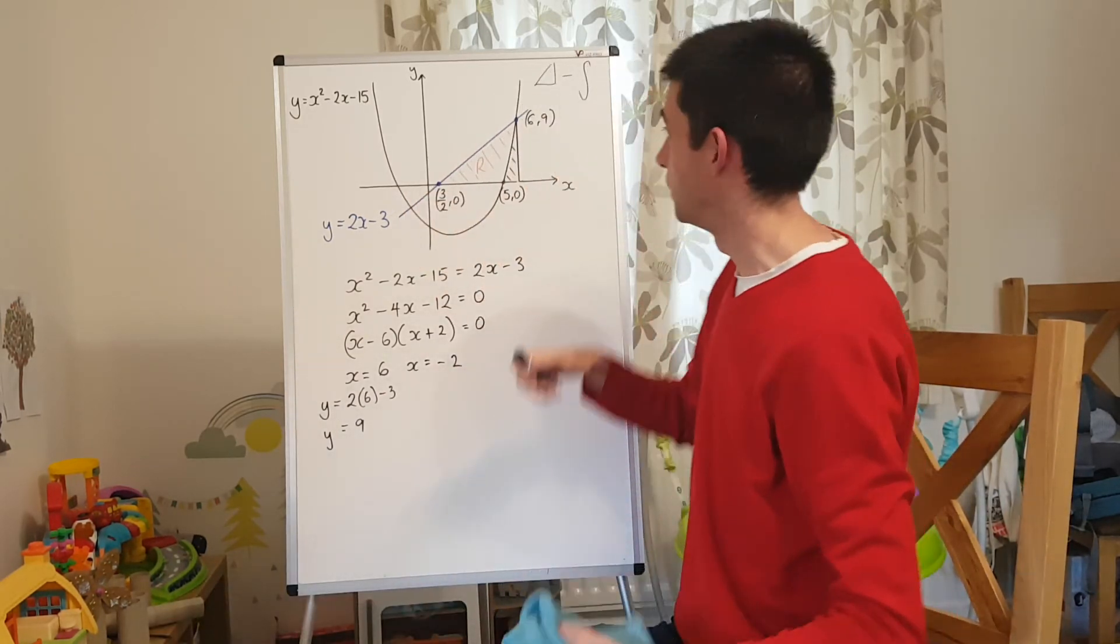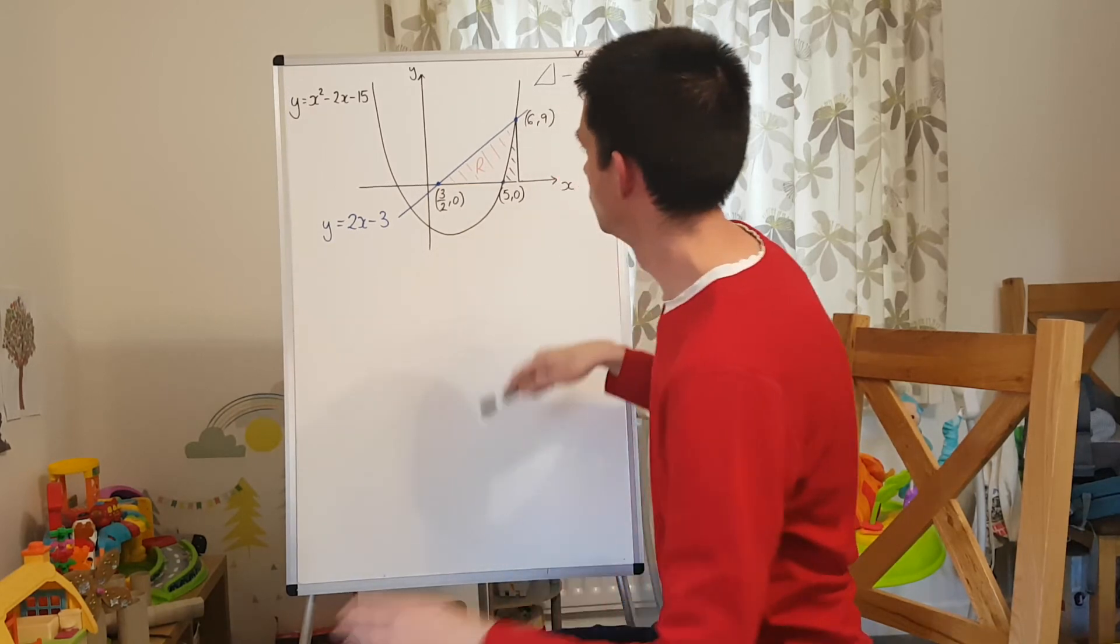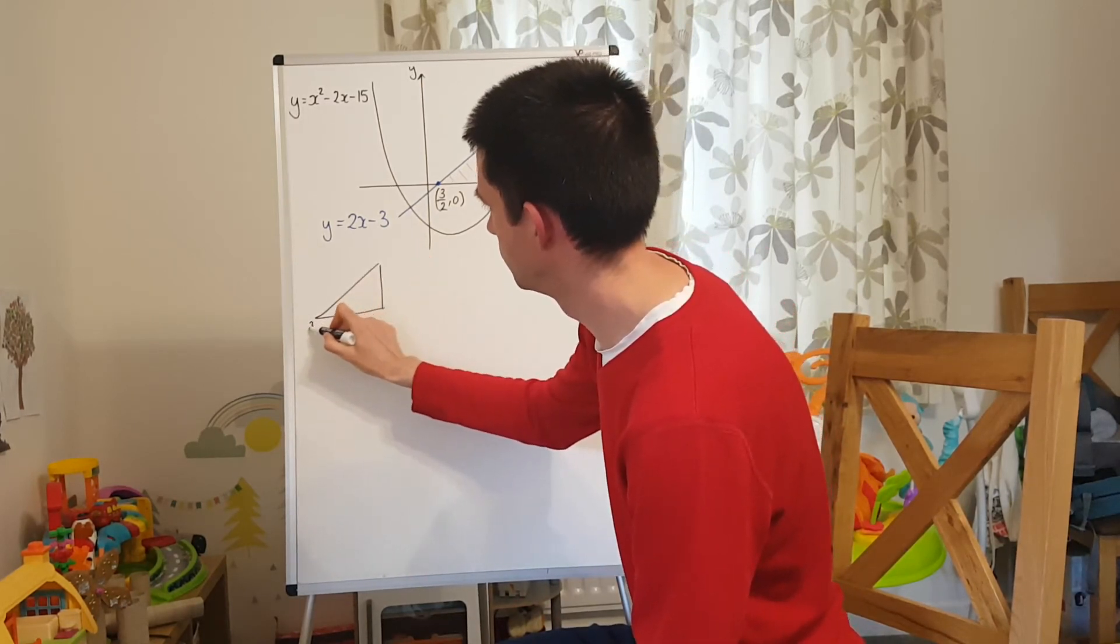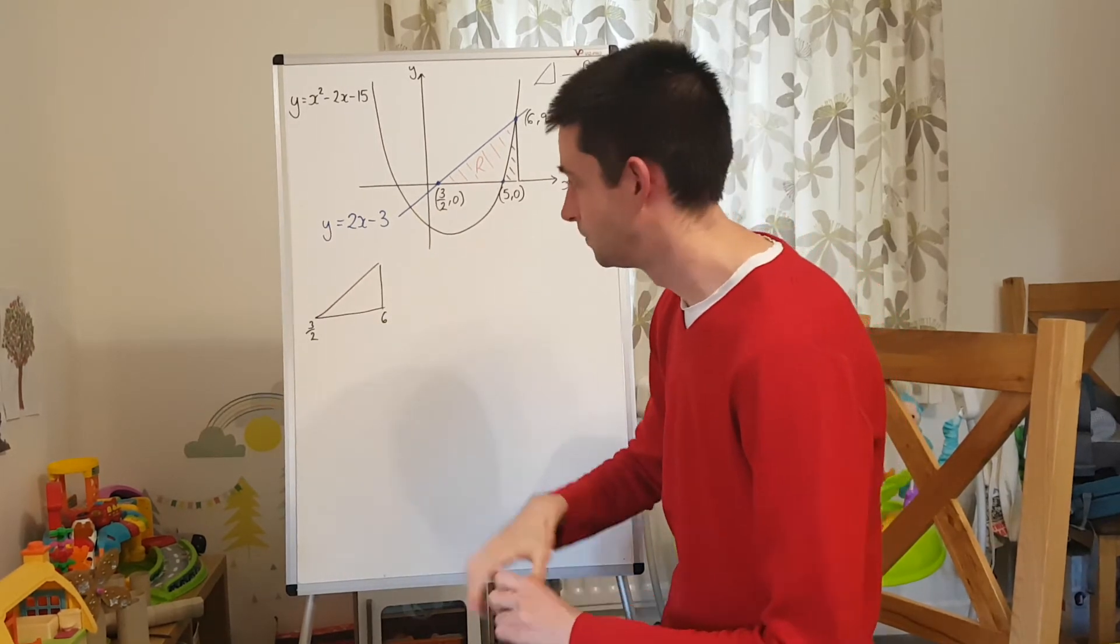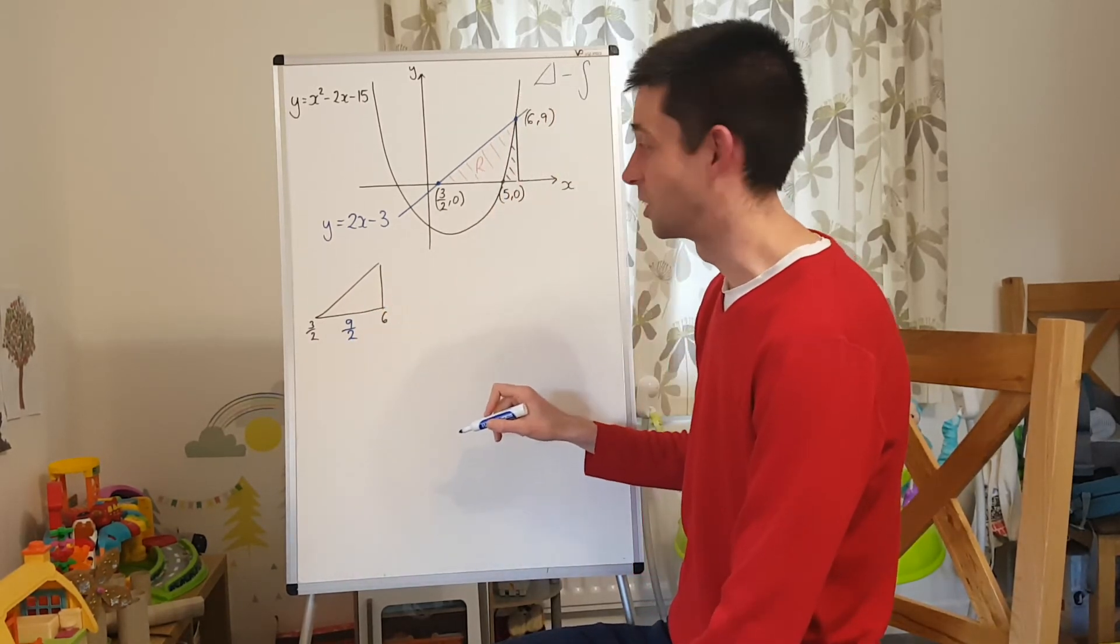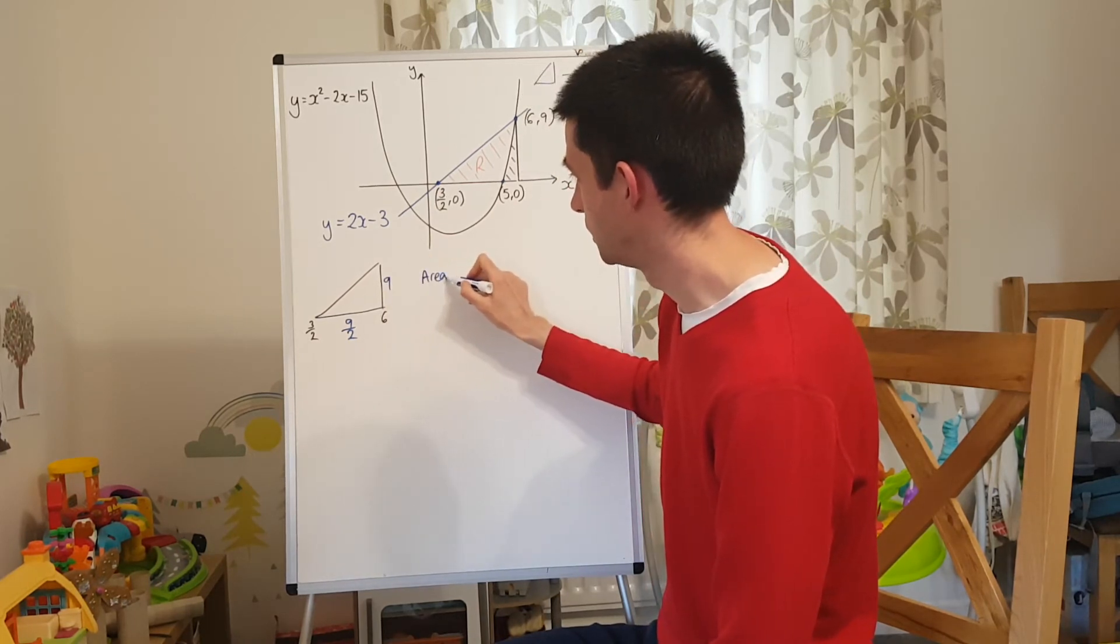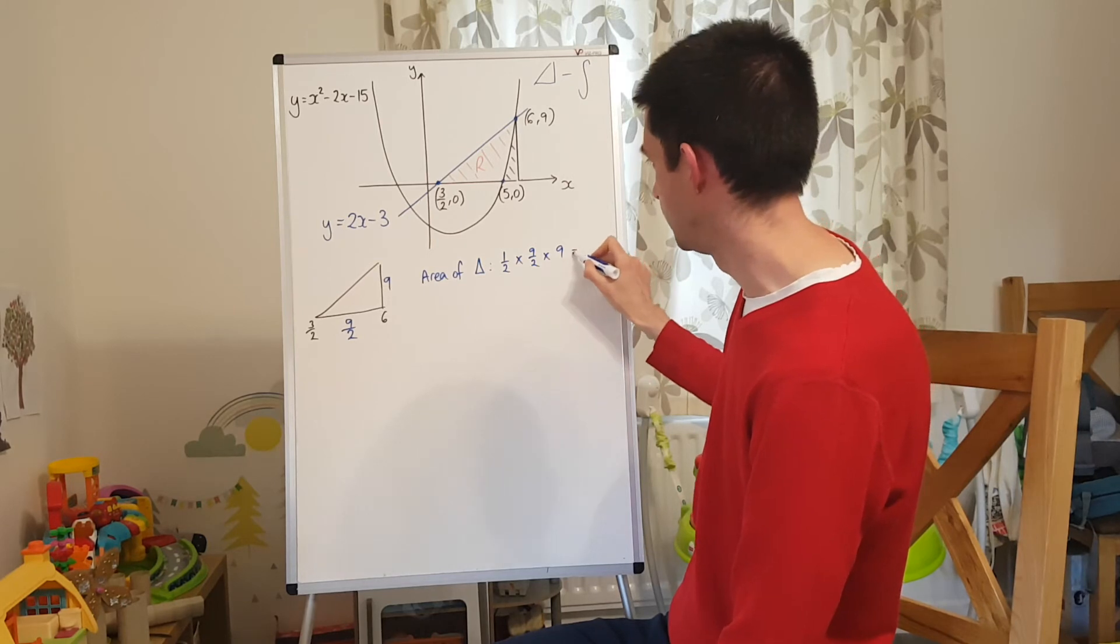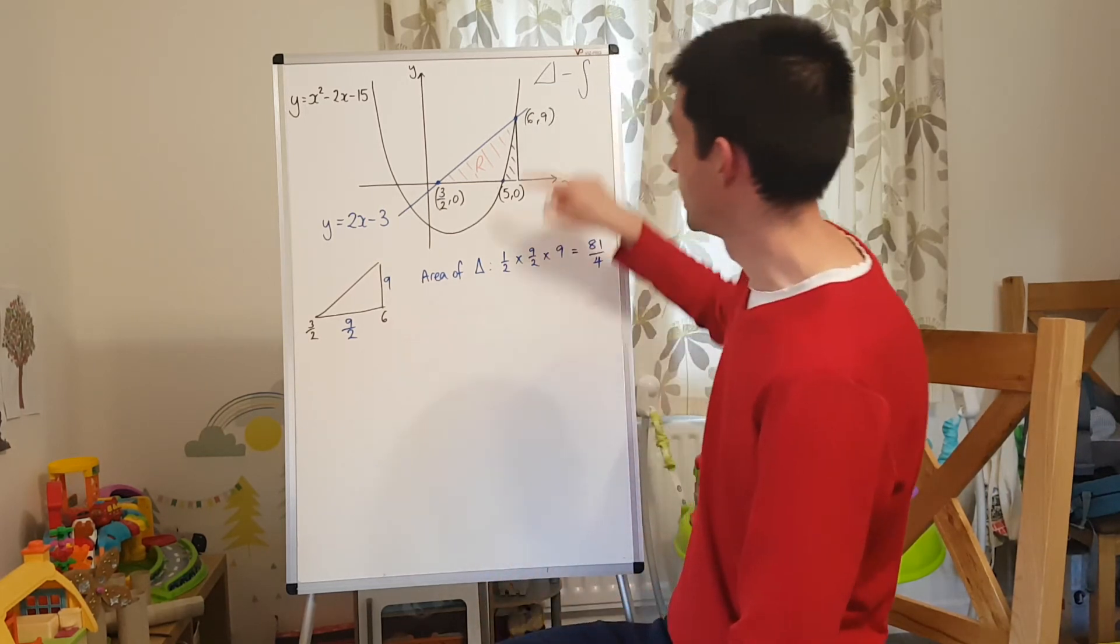So now I'm going to go through to finding the area of the triangle and finding the integral. So we'll do the triangle bit first. So this triangle here, I'm just going to do a quick sketch of it over here. It goes from 3 over 2 on the x along to 6 because it's vertically below that point 6, 9. So the base of this triangle is the difference between 6 and 3 over 2, which is 9 over 2. So that's the base of the triangle. The height of the triangle is this line here and the y-coordinate is 9. So therefore the area of the triangle, if I do a half times the base times the height, that is going to give me 81 over 4 as the area of my triangle.